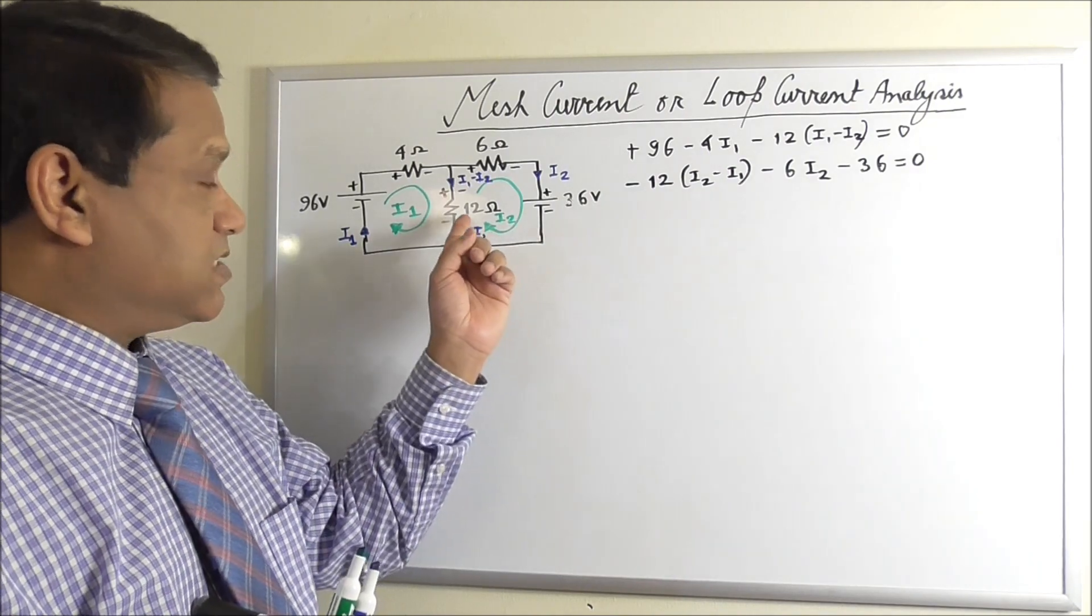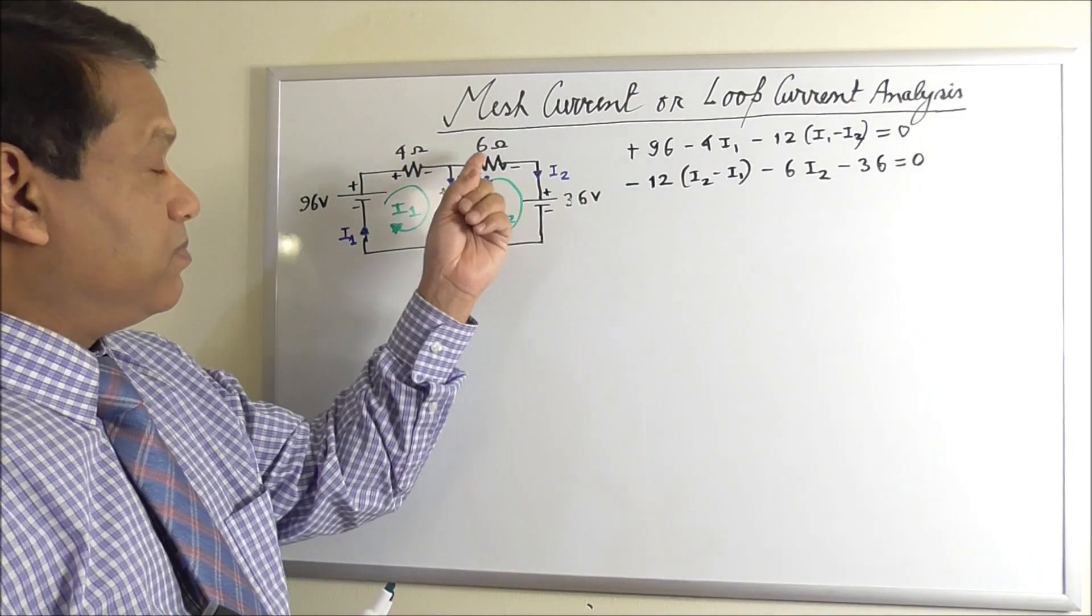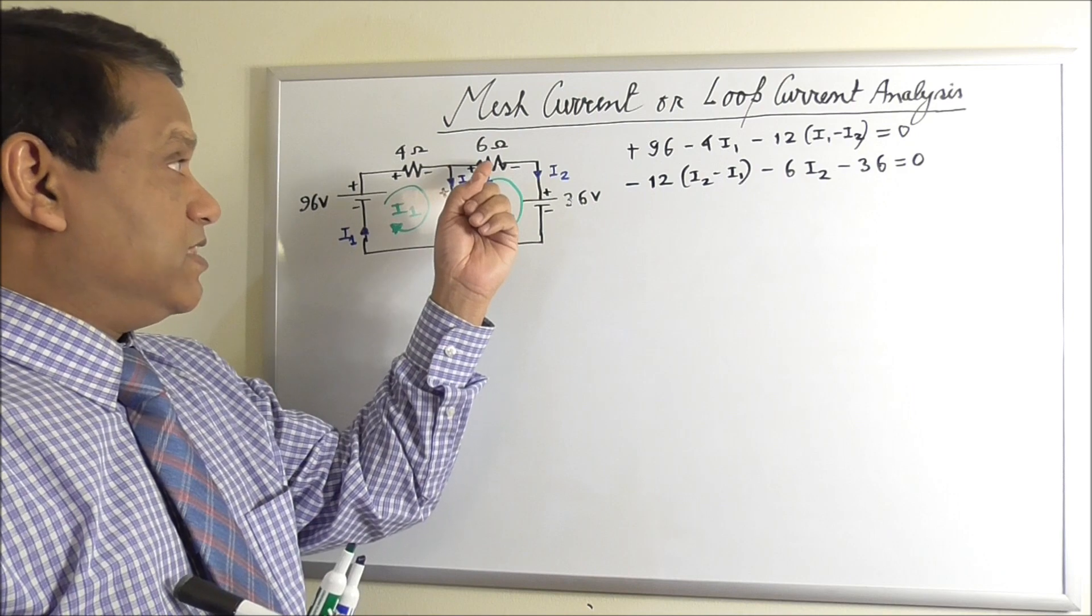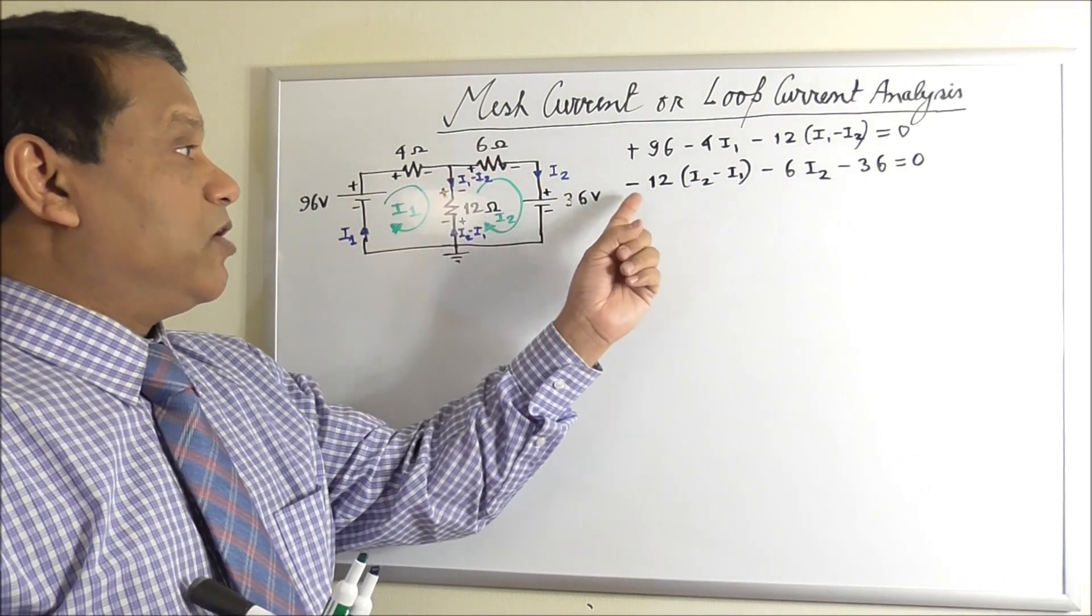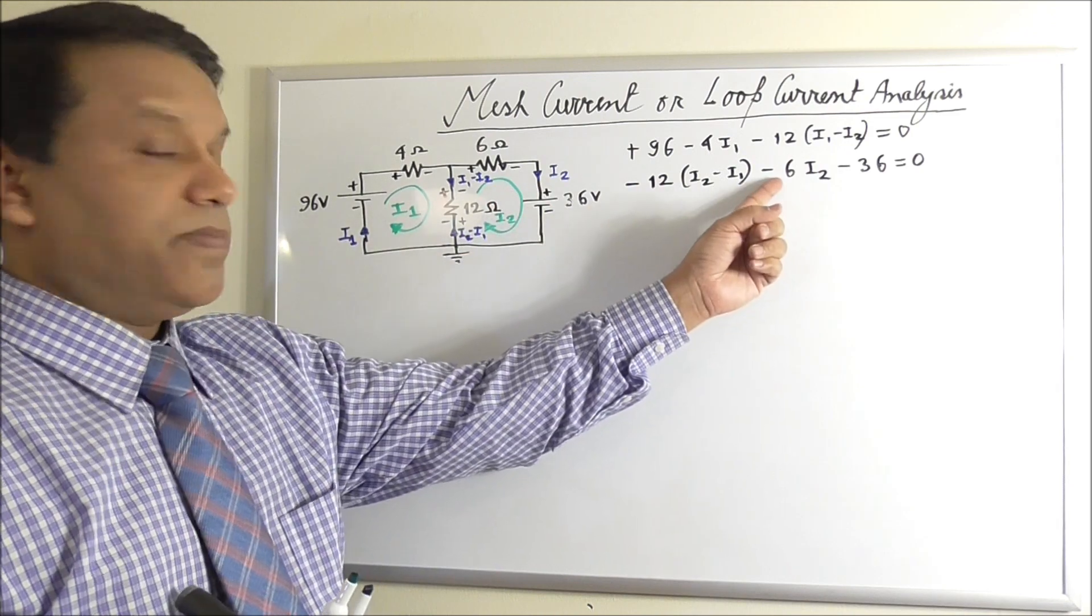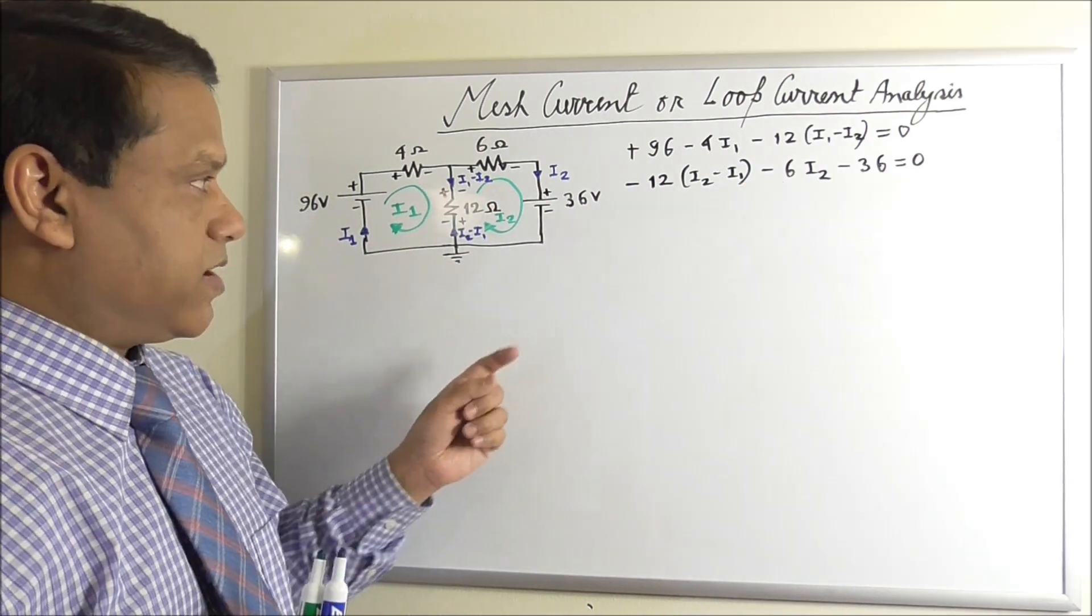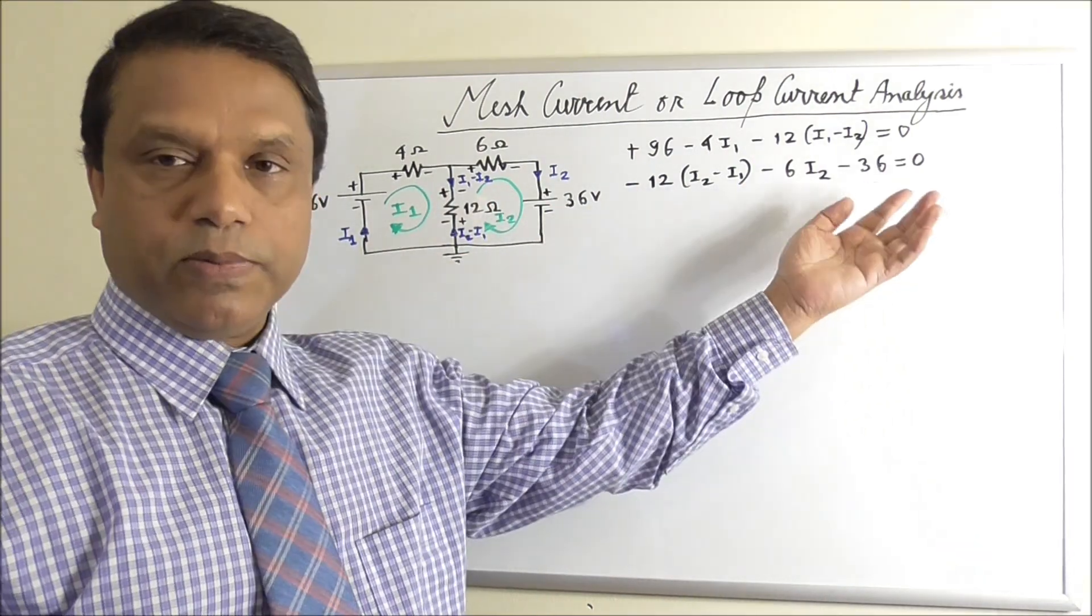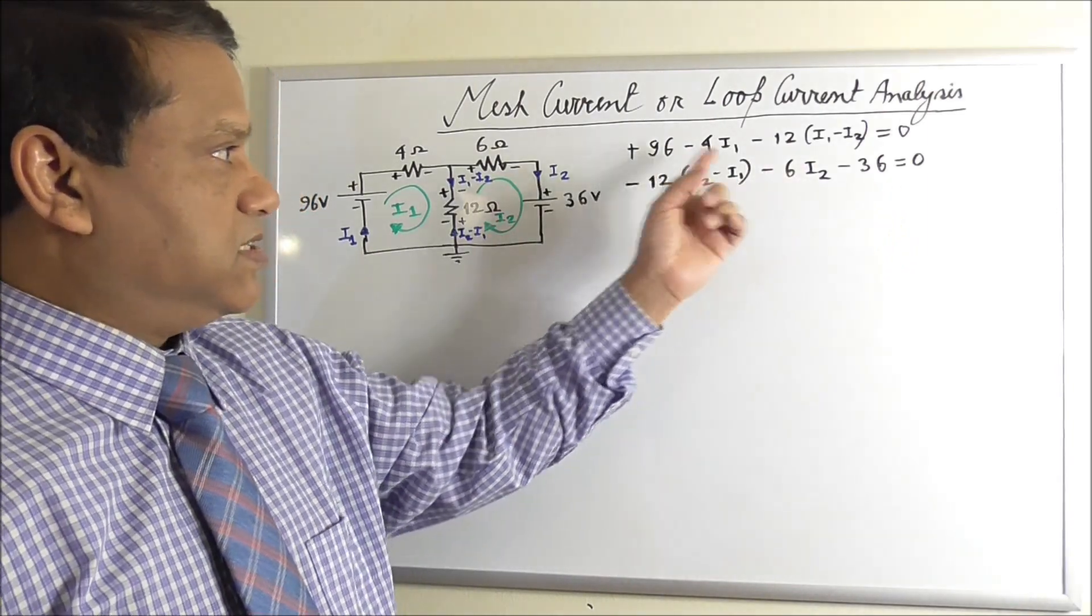But by doing this, we made sure that all the voltage drops in the resistors come out as negatives. This is negative, also this is negative. Only voltage drop or rise of voltage sources cannot be changed. This could be plus or minus. Here it is plus, this is minus.